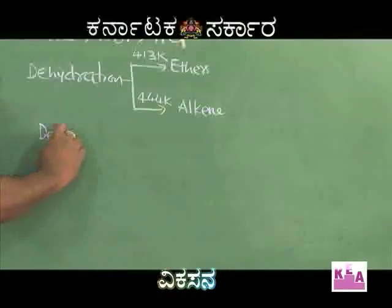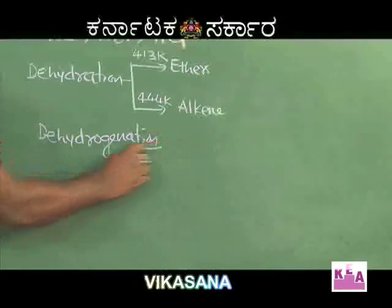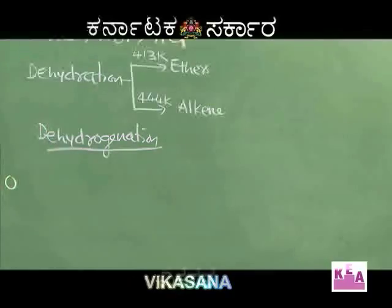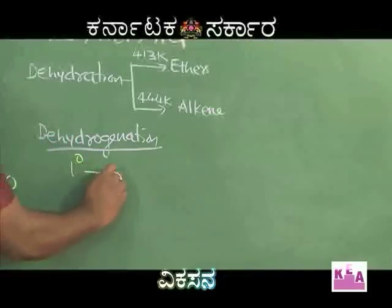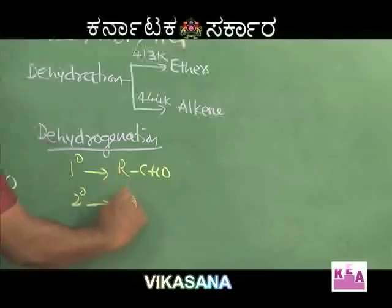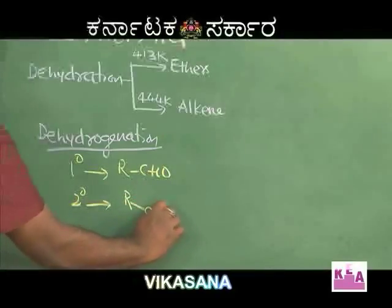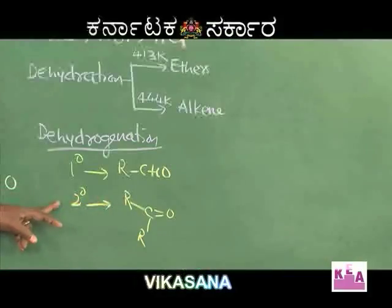The next property is dehydrogenation. Alcohols, when heated in the presence of copper at 300°C, undergo dehydrogenation, forming corresponding carbonyl compounds. Primary alcohols give aldehydes upon dehydrogenation. Secondary alcohols give ketones upon dehydrogenation. These two points should be kept in mind.